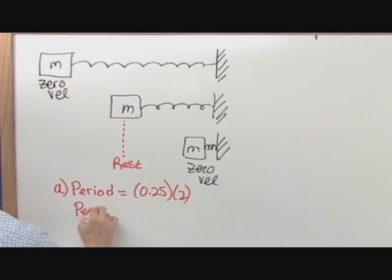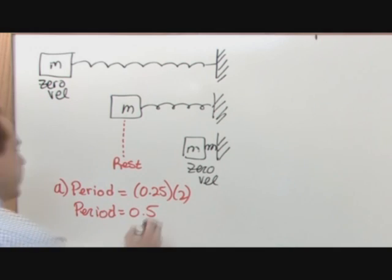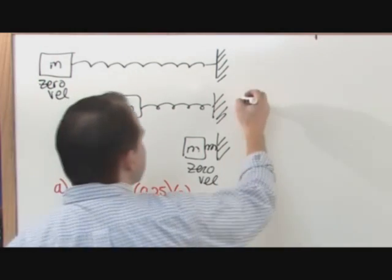So we have to multiply by two. So the period is 0.5, and what's the unit? It's seconds. That's how long it takes for one cycle.